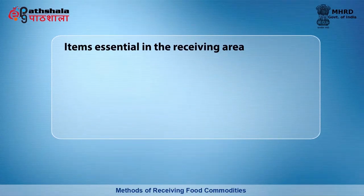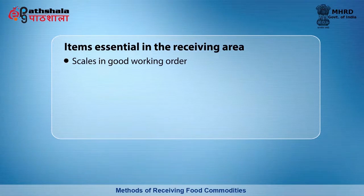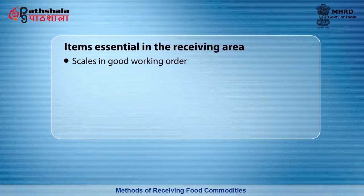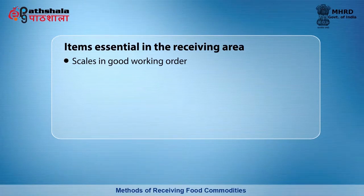Next we will see about items essential in the receiving area. The first and foremost is scales in good working order — both platform and counter scales should be available, checked periodically for accuracy and efficiency. Portion scales are useful for checking portion cuts of meat and all other products. In larger operations, the scale prints the weight of the product on the reverse side of the invoice or packing slip to eliminate doubt about the weight.